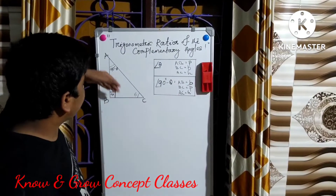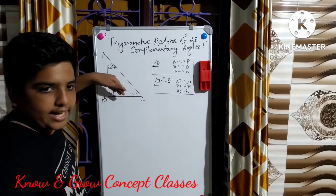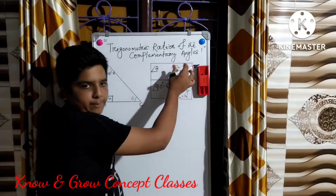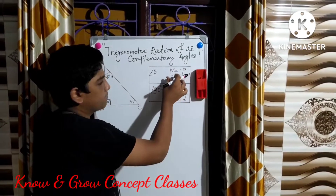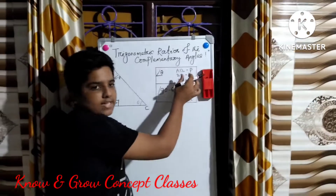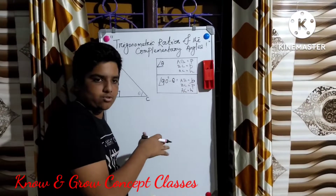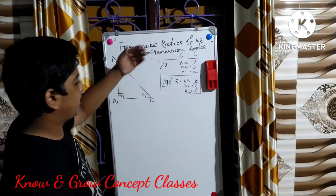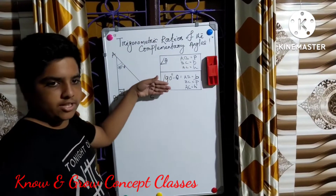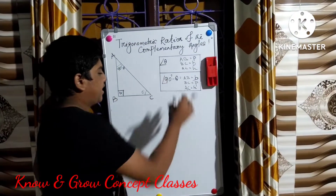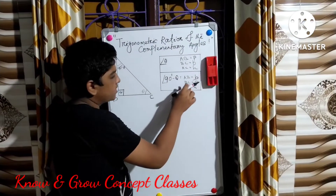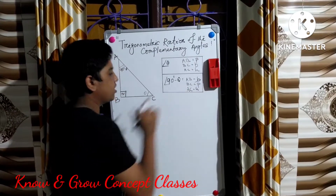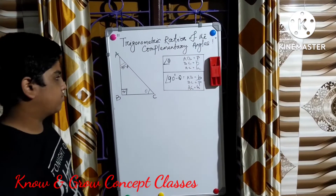If we consider theta, then AB is the perpendicular, BC is the base, and AC is the hypotenuse. And if we consider angle 90 degrees minus theta, then AB is the base, BC is the perpendicular, and AC is the hypotenuse.